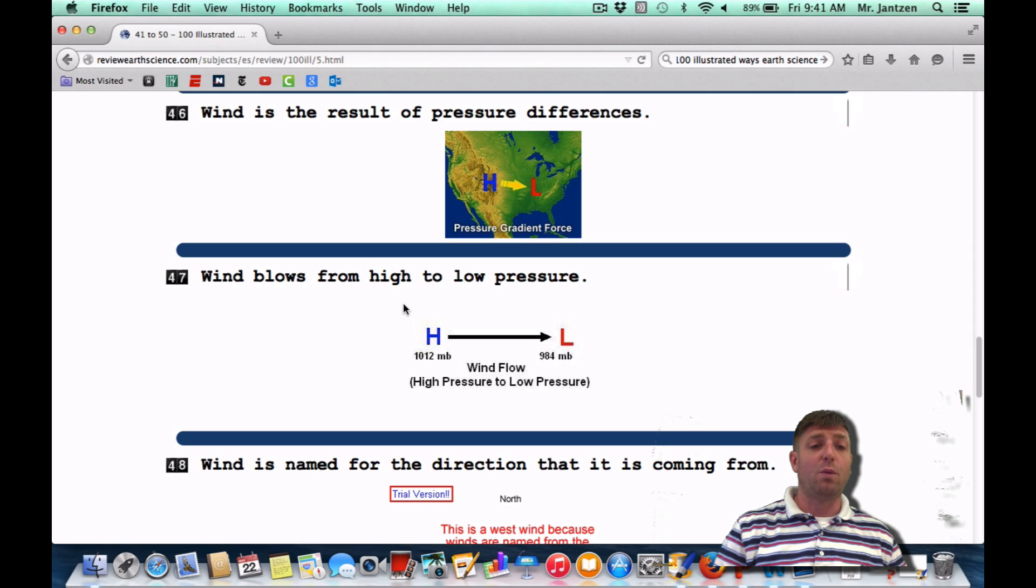Number 47, wind blows from high to low pressure. That's kind of what we said before. Here's a nice little pressure gradient here. That's a pretty decent size gradient. So you're going to have a decent wind going from high to low. It's always going to start around the high, go outward and clockwise into the low counterclockwise.